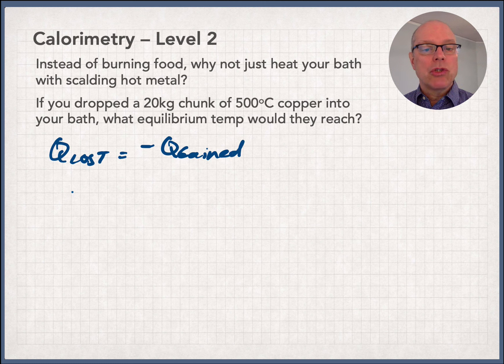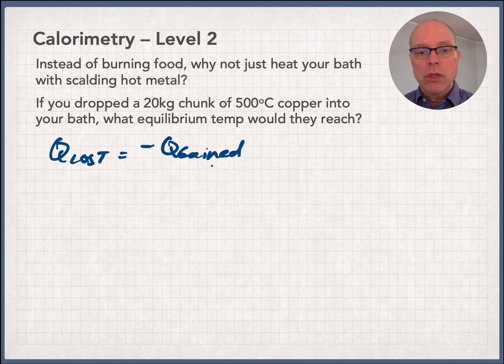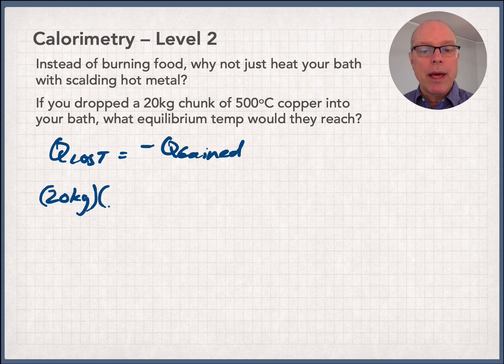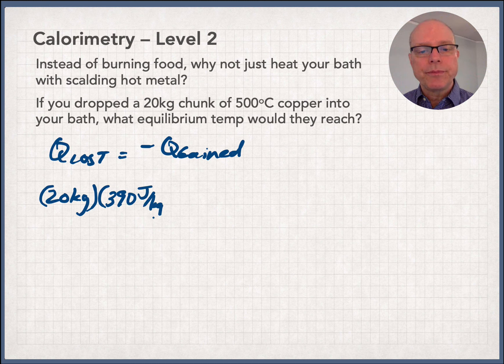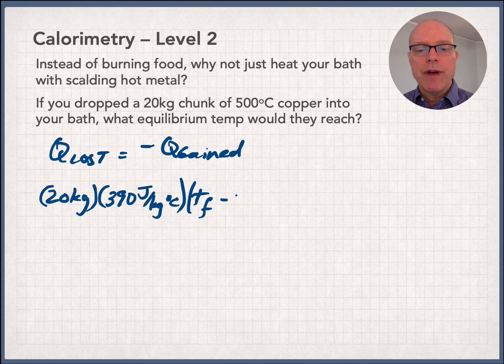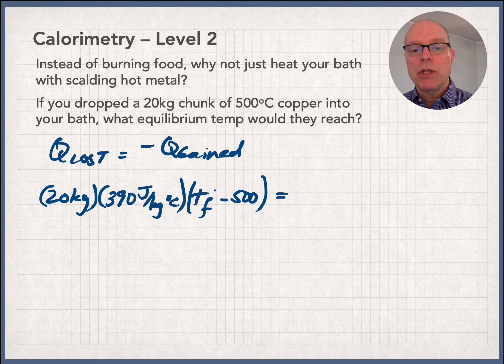So what I'm going to do is just write down Q equals MC delta T for the copper and for the water. So it's not tricky. So what's the Q lost for the water? I have 20 kilograms of copper metal. I go hunt down C, the specific heat of copper metal, and that's 390 joules per kilogram Kelvin or kilogram degrees C. And what's the delta T? Well, here's where you have to do a little bit of common sense thinking. So this is going to be Tf minus 500. That's going to be my delta T for copper. So T2 minus T1.